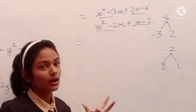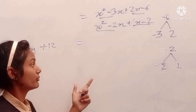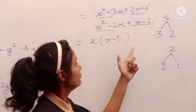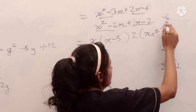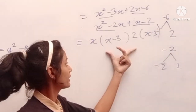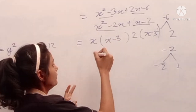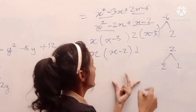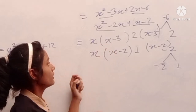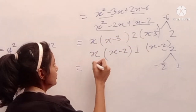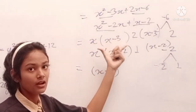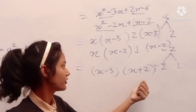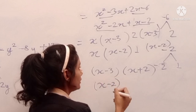We separate each expression into two pairs and take a number outside the bracket to find the same term inside. Taking x out of the first pair gives x times (x minus 3), and taking 2 out of the second pair also gives (x minus 3). Both terms inside the bracket are the same. Similarly, taking x outside gives (x minus 2), and taking 1 outside gives (x minus 2). So our first equation factors as (x minus 3)(x plus 2) and our second as (x minus 2)(x plus 1).